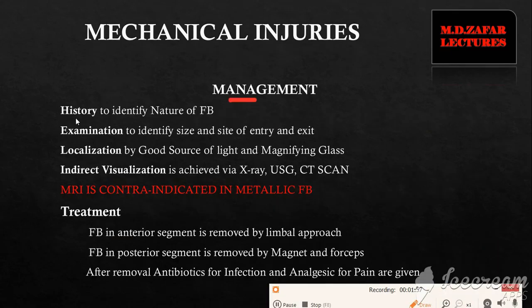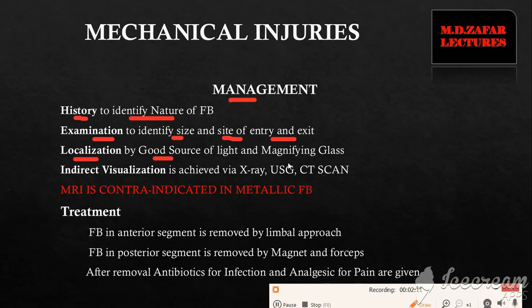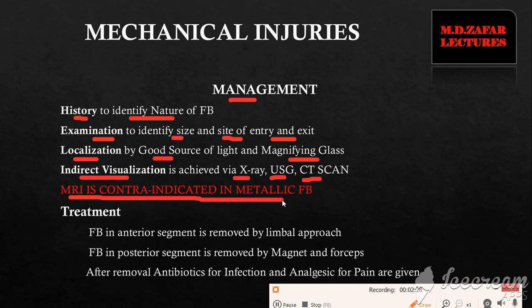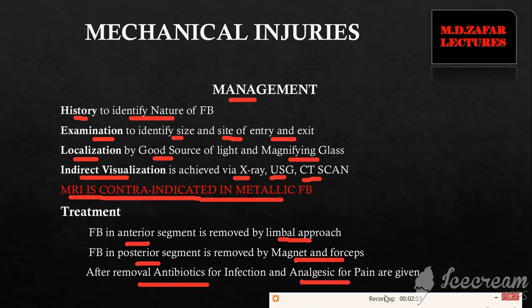For management of intraocular foreign body, we take a history from the patient to identify the nature of the foreign body, examine to identify its size and site of entry and exit, and localize it using a good source of light and a magnifying glass. If visualization is not possible, indirect visualization by X-ray, ultrasound, or CT scan can be used. Importantly, MRI is contraindicated in the case of metallic foreign bodies. A foreign body in the anterior segment is removed by the limbal approach; one in the posterior segment is removed by means of magnet and forceps. After removal, antibiotics for infection and analgesics for pain are given.